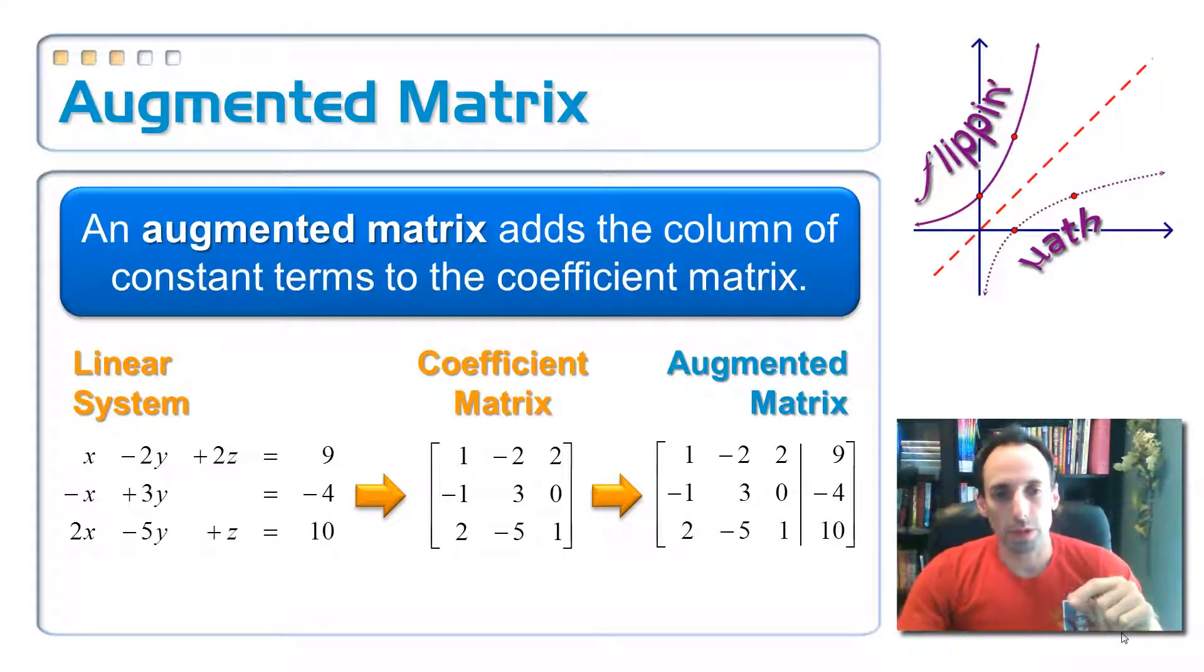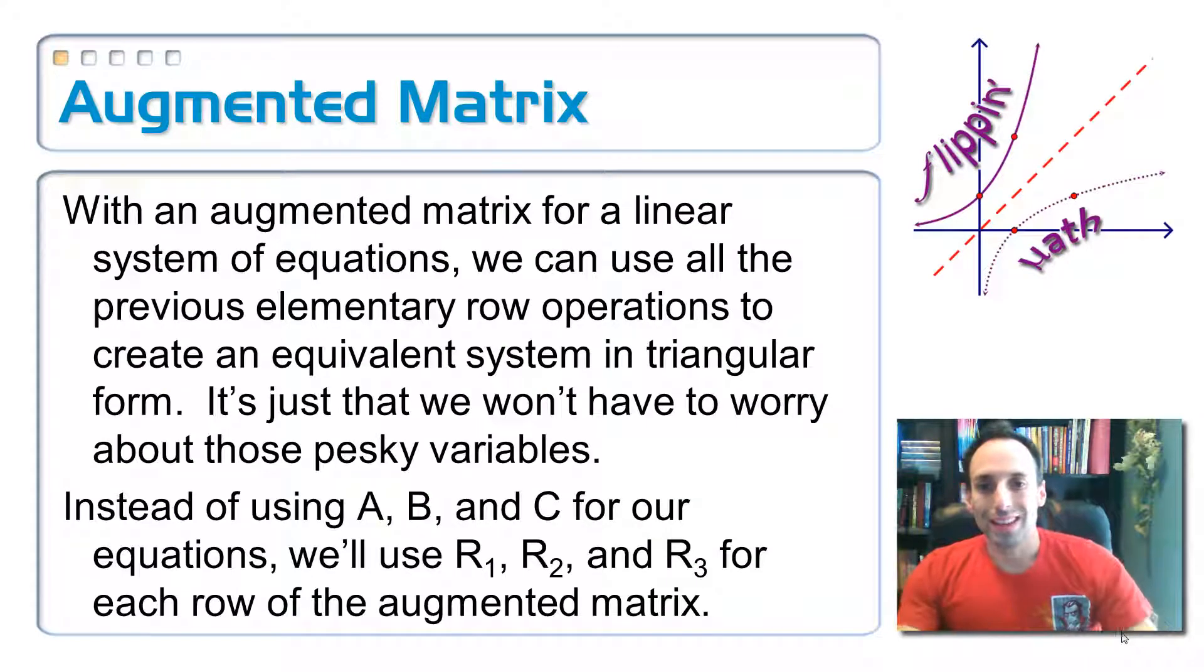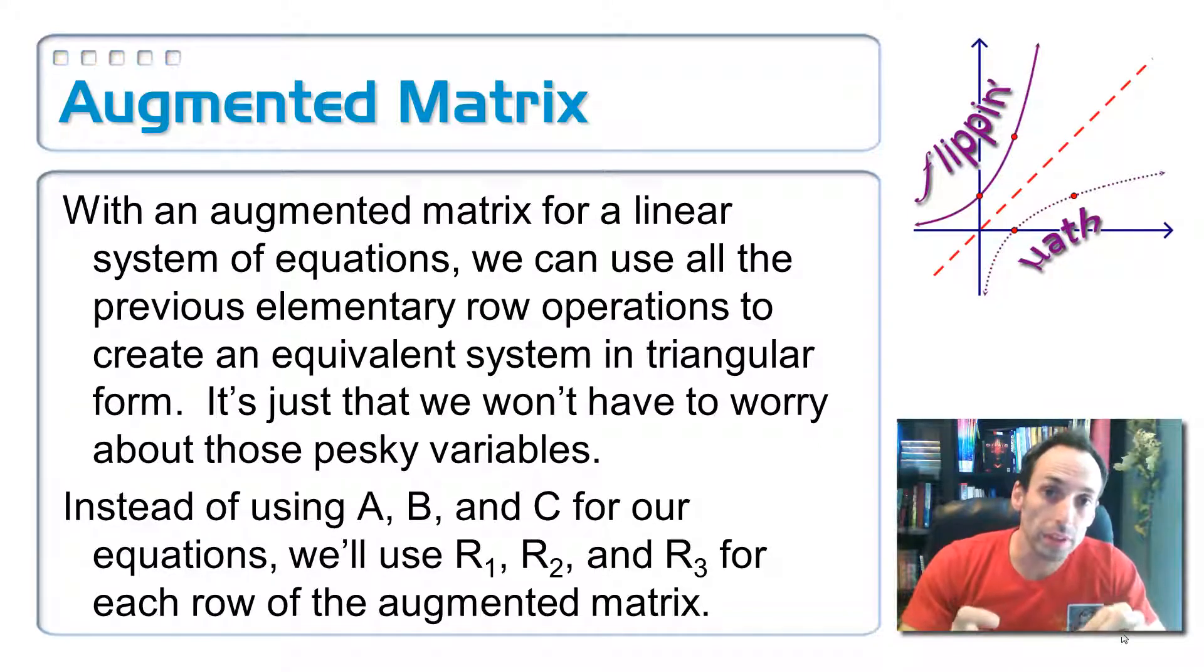And this becomes a 3 by 4 matrix. It's called augmented because we have added in a column of constant terms. Now then, everything that we did with the equations, the elementary row operations, being able to exchange two equations, multiplying any equation by a non-zero constant, and then doing that linear combination of adding a multiple of one equation to another equation to replace that equation, we can do that with these augmented matrices.